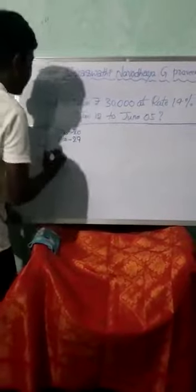February has 29 days. March has 31 days. April has 30 days. May has 31 days. For June, the last date is June 5, so June contributes 5 days. Now do the addition.